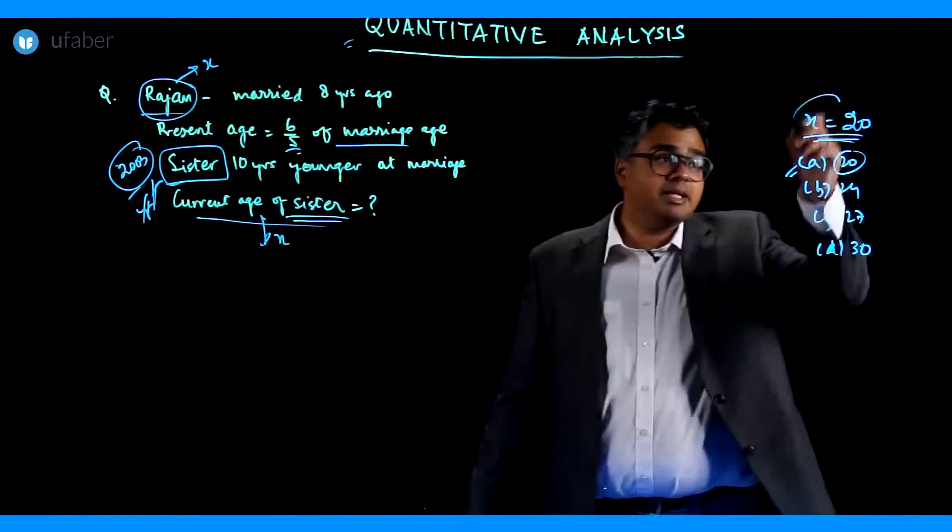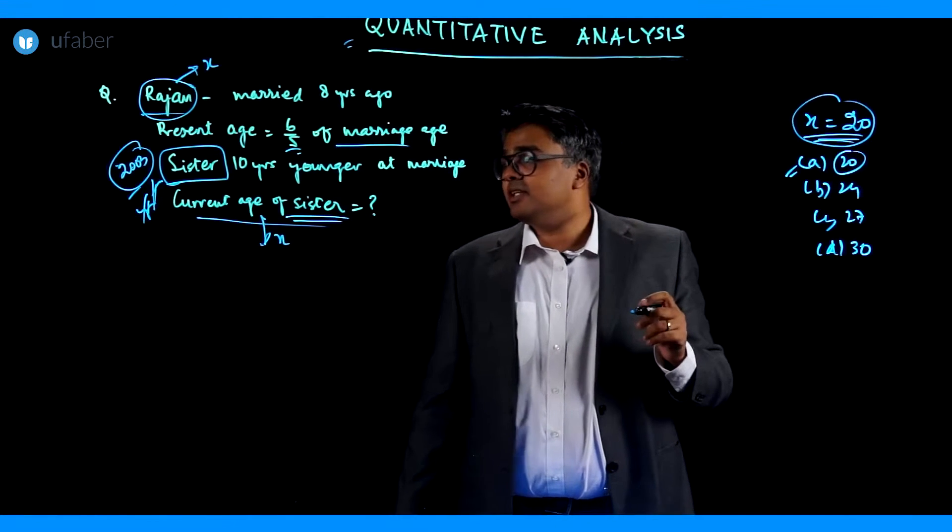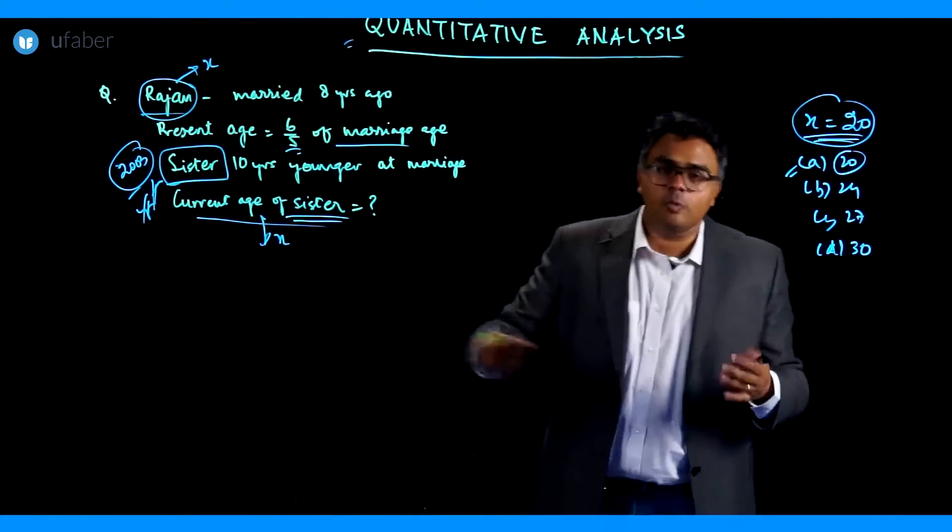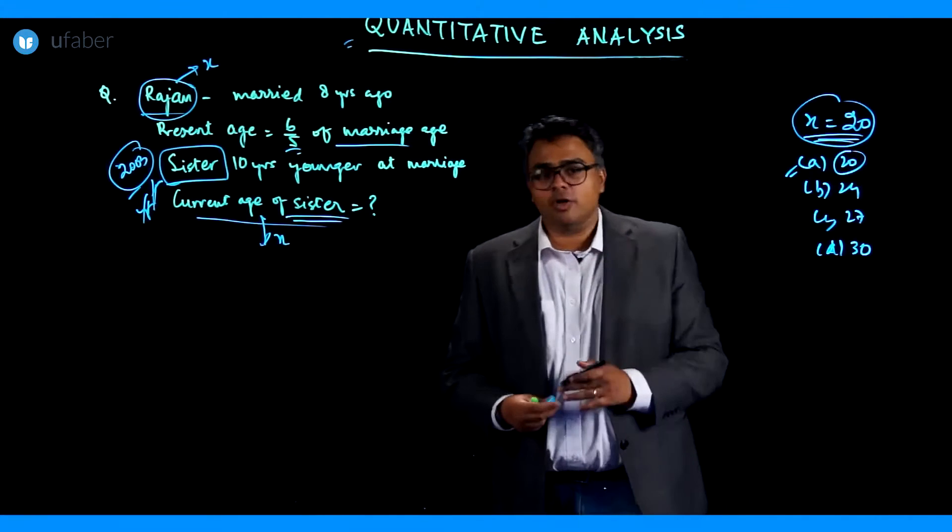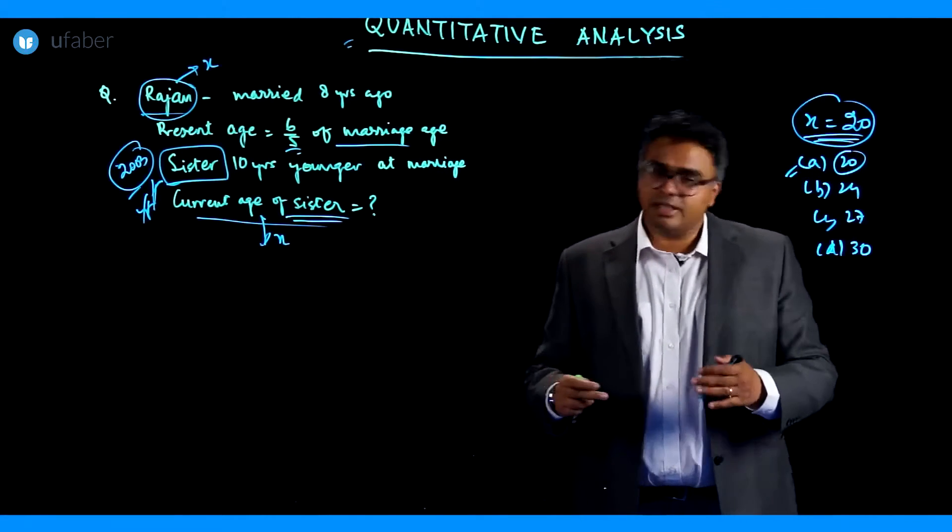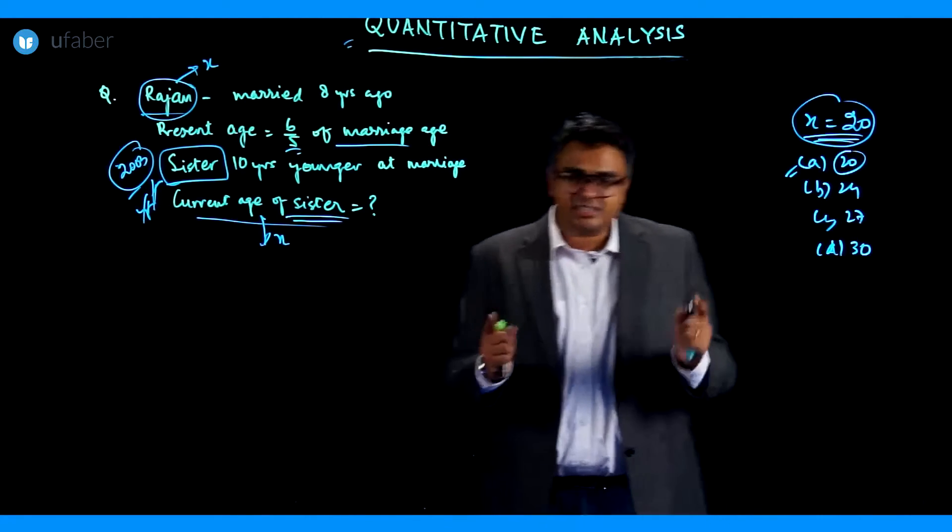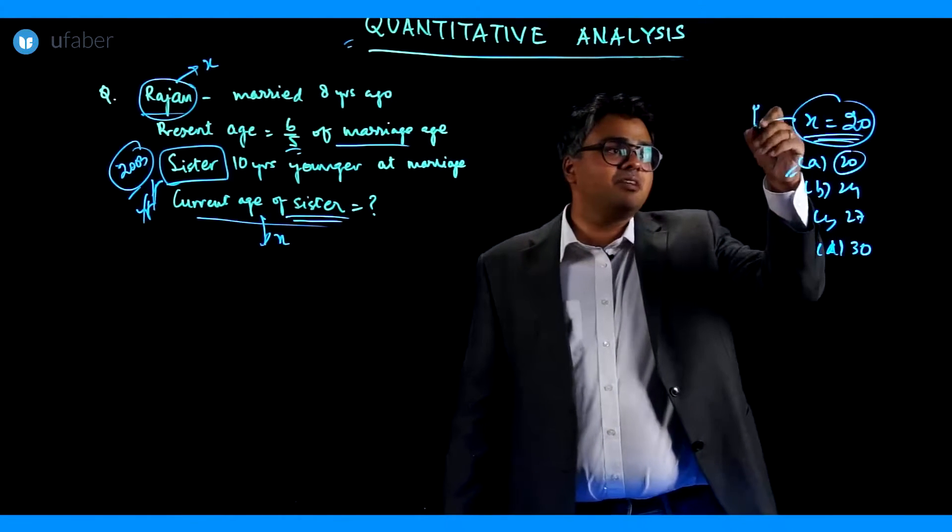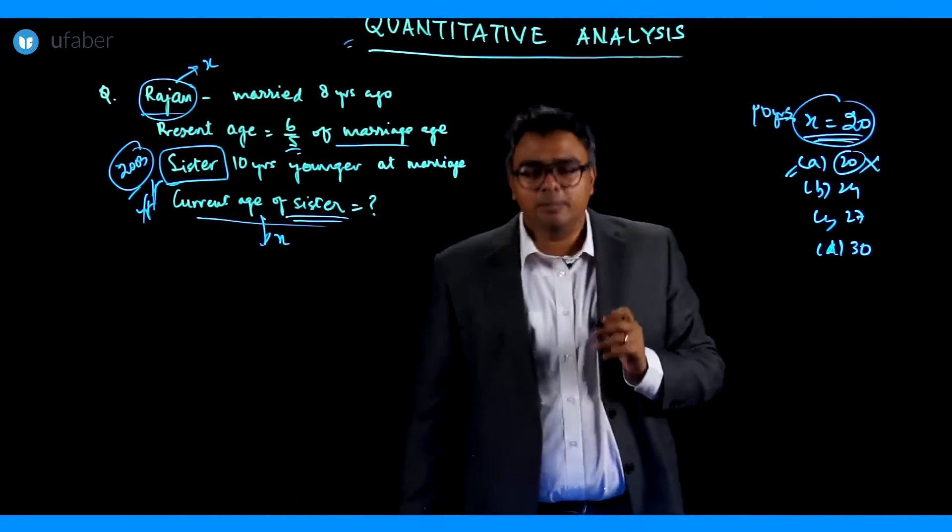Suppose Rajan's age is 20, X is 20 means Rajan's age is 20, and the sister was 10 years younger to him at the time of marriage and will still be 10 years younger. If your brother or your sister is 5 years younger to you, then 20 years later also he or she will be 5 years younger to you only. So the age difference does not change. So if Rajan is of 20 years, then the sister will be of 10 years. So this answer is going to be a wrong answer. Please remember that.